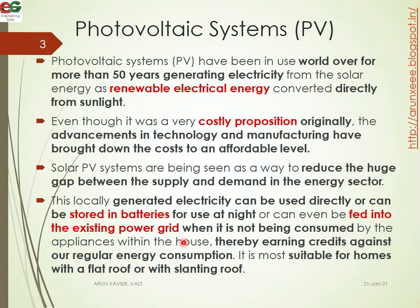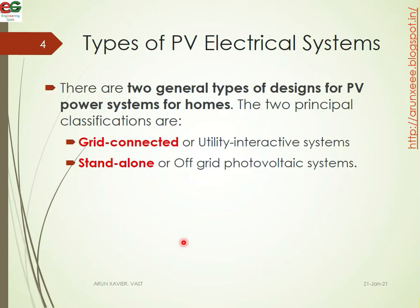Solar PV systems are most suitable for homes with a flat roof or slanting roof. There are mainly two types of photovoltaic systems: the grid-connected system, which is the most standard system, and the off-grid photovoltaic system.